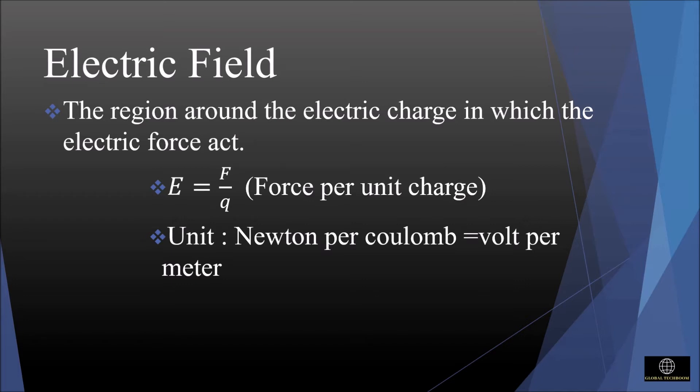We can represent the electric field by the symbol E. So E is equal to F by Q, where F is the force and Q will be the charge. The SI unit of the electric field is newton per coulomb, which is equal to volt per meter.